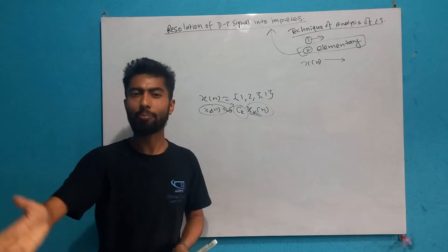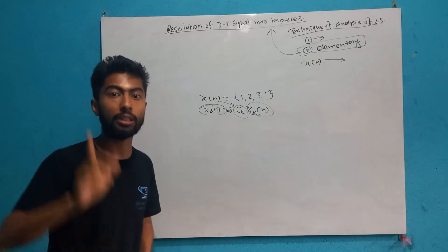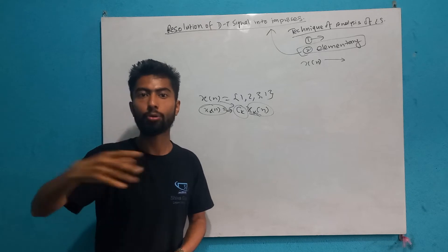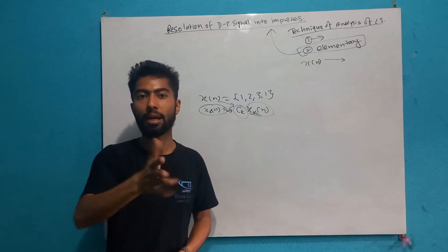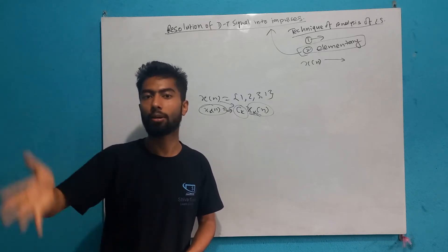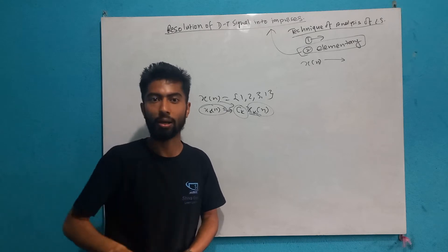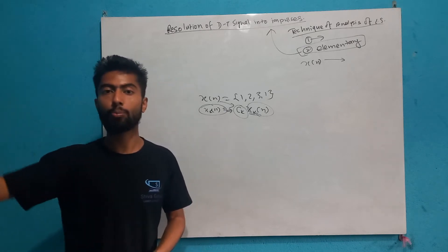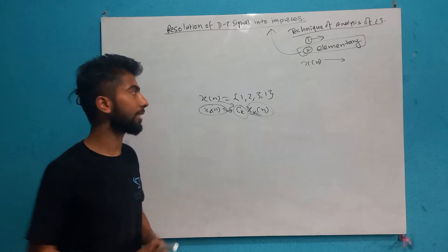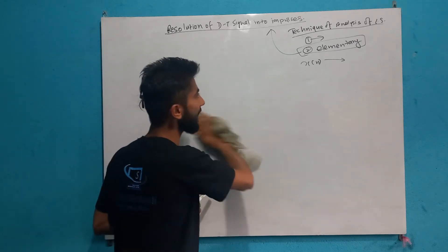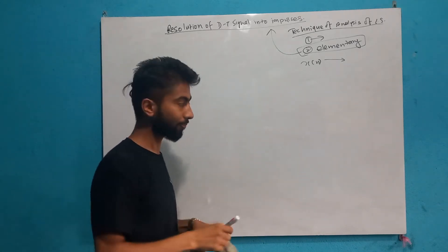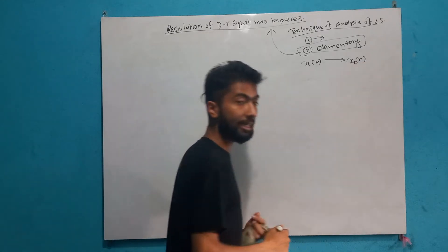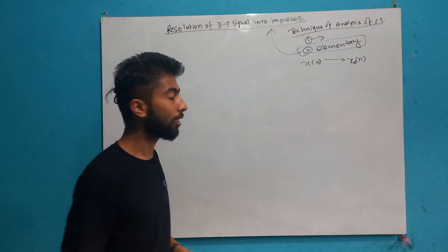This is a unit sample sequence, so we can make this a unit impulse sequence. We can set this to 0, or we can make this del[n-k]. We can apply a delay, so we can represent this as a shifted impulse. In x[n], we substitute x[k], and in x[k], we can set this appropriately.